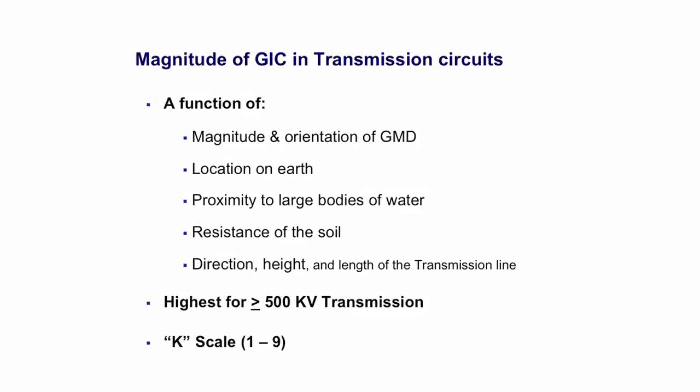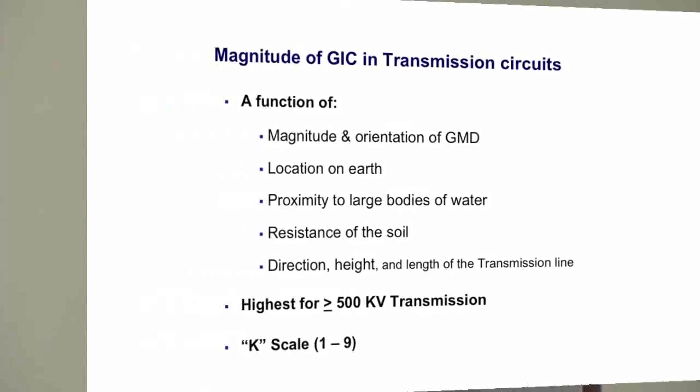The resistance of the soil is the most important factor that determines the magnitude of the GIC. The direction, height, and length of the transmission line also matter — the longer and higher the transmission line, the greater the induced voltage and the higher the GIC. That's why we see higher GIC numbers for higher voltage ratings; 500 kV and up is where you get the highest GIC magnitudes.